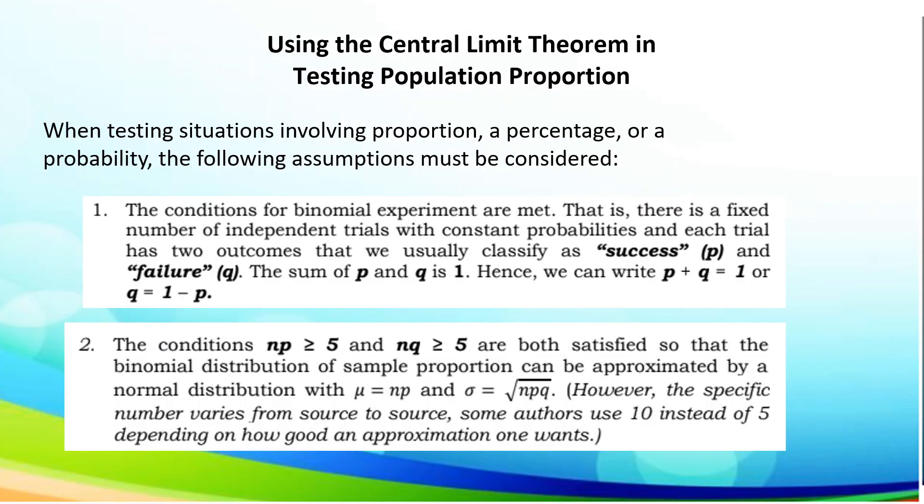Moving on, let us now discuss using the central limit theorem in testing population proportion. When testing situations involving proportion, percentage or probability, the following assumptions must be considered. The conditions for a binomial experiment are met: that is, there is a fixed number of independent trials with constant probabilities, and each trial has two outcomes that we usually classify as success or p and failure as q. The sum of p and q must be equal to 1. Hence we can write p plus q equals 1, or to be able to get q which is 1 minus p.